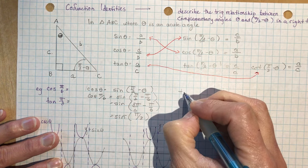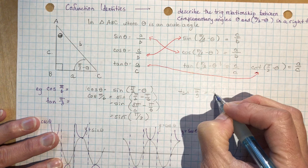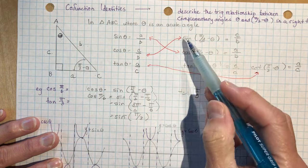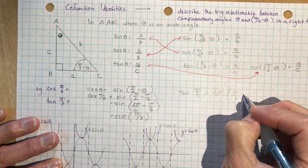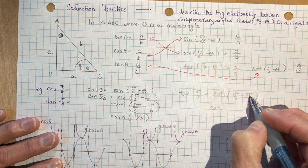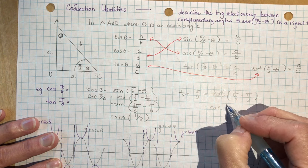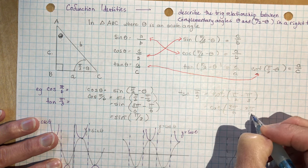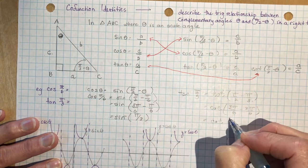Let's try another one: the tan of pi over three. Tan goes to cotangent, so it equals the cotangent of pi over two minus pi over three. Making a common denominator of six: three pi over six minus two pi over six gives pi over six. So the tan of pi over three equals the cotangent of pi over six.